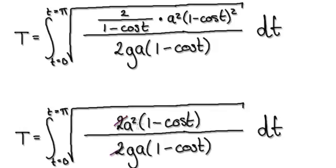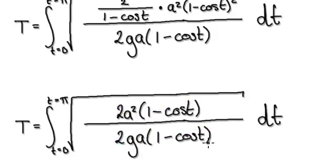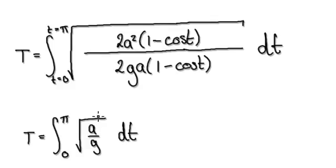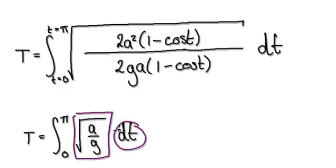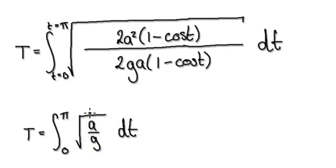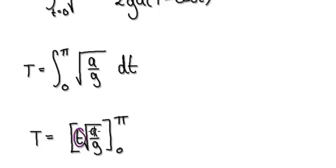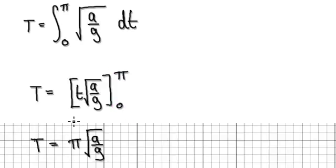Now cancel out. This here will cancel out with this, and this here will cancel out with this. Follow it through and it will give you this. This thing here — you're integrating with respect to t, and this thing here is a constant. So when you integrate it, it basically becomes t times that constant, evaluated from t equals zero to t equals pi.